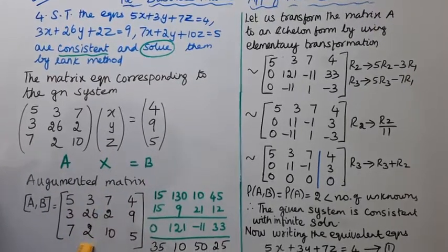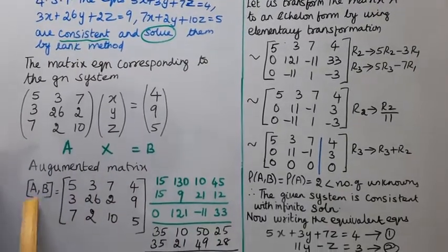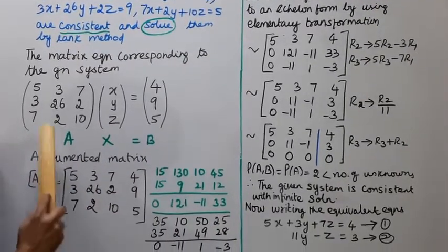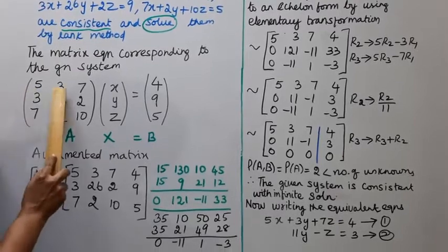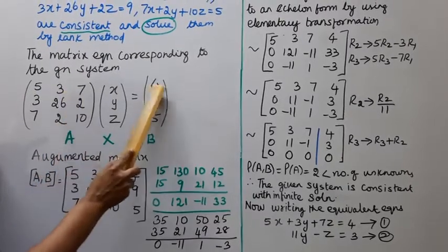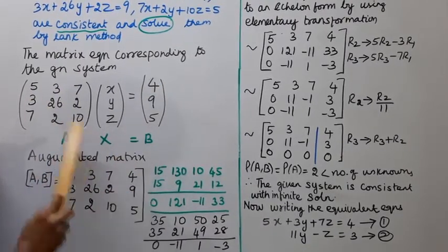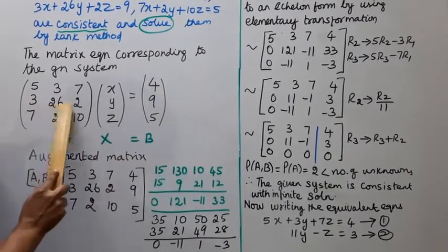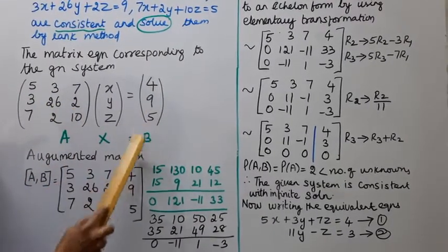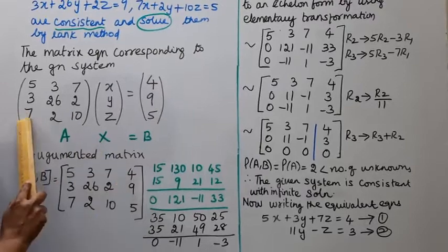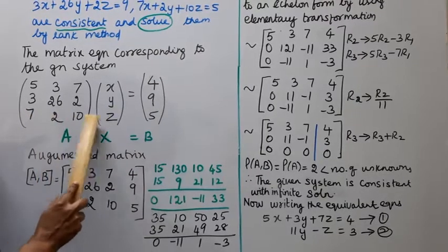The augmented matrix [A|B] is written as: row 1: 5, 3, 7, 4; row 2: 3, 26, 2, 9; row 3: 7, 2, 10, 5.